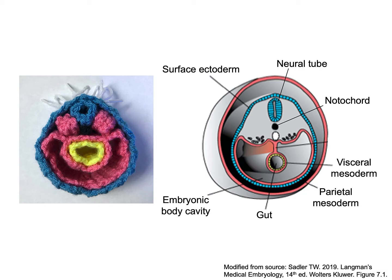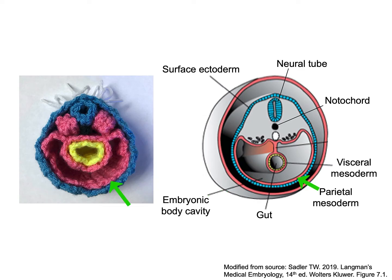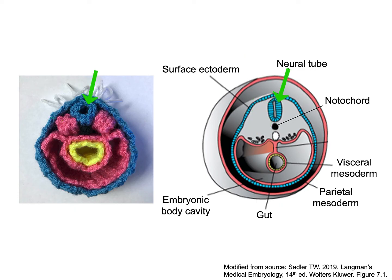Let's compare the model with the corresponding figure from your textbook. The model represents the embryo suspended within the amniotic cavity. Inside, there is a gut tube derived from the endoderm, which will give rise to the inner lining of the gastrointestinal tract and airways. The gut tube is closely surrounded by visceral mesoderm, which will give rise to smooth muscle and connective tissue, as well as the heart. A body cavity separates the visceral mesoderm from the parietal mesoderm, which will form membranes of the body wall and the bones of the limbs. Looking dorsally, the notochord is a signaling structure in midline; lateral to it is the paraxial mesoderm, which segments into somites that give rise to the axial skeleton, skeletal muscle, and the dermis of the skin. Dorsal to the notochord is the neural tube, which will form the central nervous system. The outer layer is the ectoderm, which will form the epidermis of the skin. This entire embryo is suspended in the amniotic cavity.